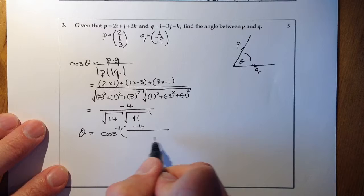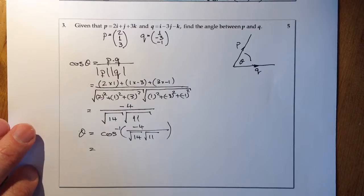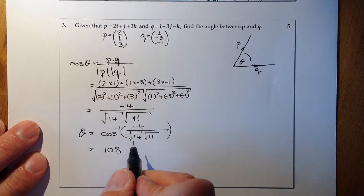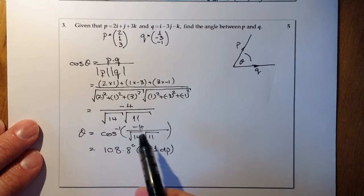We'll just put the whole thing into the calculator, and that's going to be root 14, root 11, and we'll work that through on the calculator. So what that should give us is 108.8 degrees to 1 decimal place.